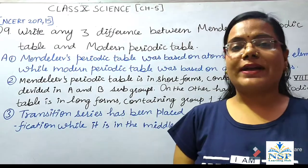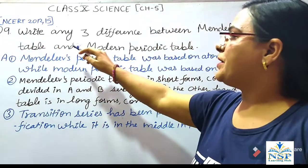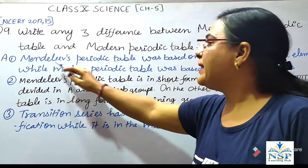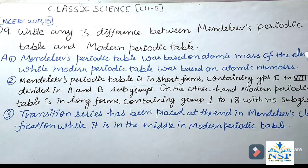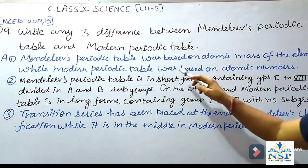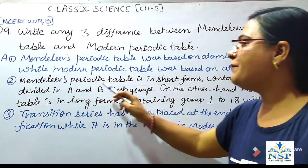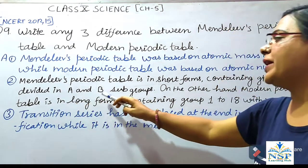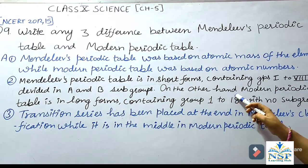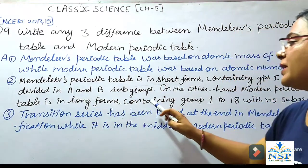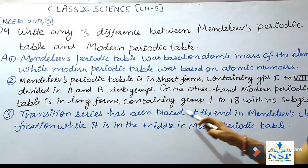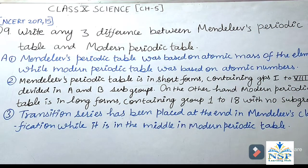Question No. 9: Write any 3 differences between Mendeleev's Periodic Table and the Modern Periodic Table. First, Mendeleev's Periodic Table was based on atomic mass, while the Modern Periodic Table is based on atomic numbers. Second, Mendeleev's Periodic Table is in short form containing Groups 1 to 8, divided into A and B subgroups, while the Modern Periodic Table is in long form containing Groups 1 to 18 with no subgroups. Third, the transition series was placed at the end in Mendeleev's classification, while it is in the middle in the Modern Periodic Table.